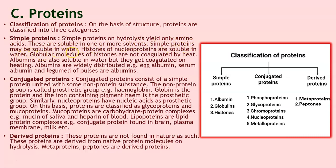Simple proteins may be soluble in water. Histones of the nuclear proteins are soluble in water, and globular molecules of histones are not coagulated by heat. Albumins are also soluble in water but get coagulated on heating. Albumins are widely distributed — examples include egg albumin, serum albumin, and legumes of pulses. When you break open an egg on a hot pan, it gets coagulated and loses its fluid transparent color — that phenomenon is called coagulation.